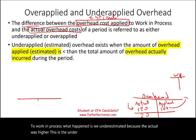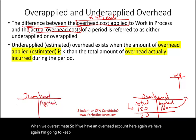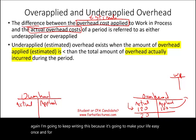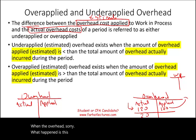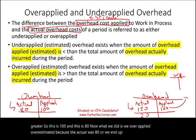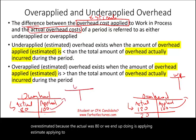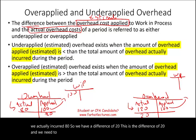Over-applied is the opposite. When the overhead applied is greater than the actual — say applied is $100 but actual was only $80 — we overestimated. We transferred $100 to work in process, but we actually incurred $80, leaving a difference of $20. We need to know what to do with this difference.